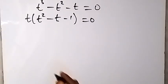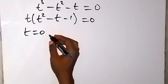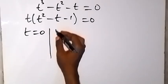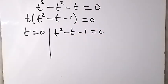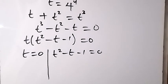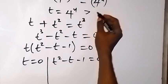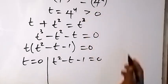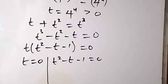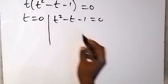We have two cases: t equals 0, and t² minus t minus 1 equals 0. Since t was defined as 4 raised to power u, t must be greater than 0. Therefore we discard t equals 0 and proceed to solve the quadratic t² minus t minus 1 equals 0.